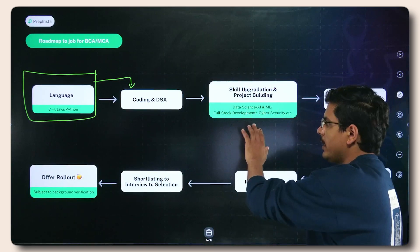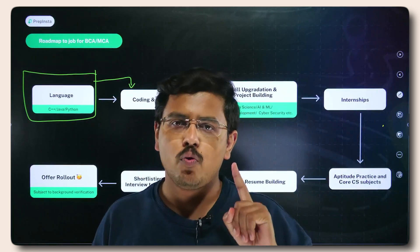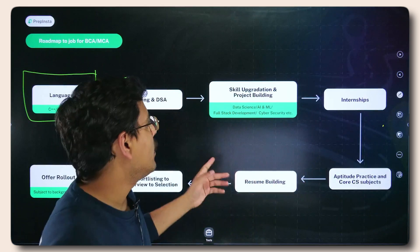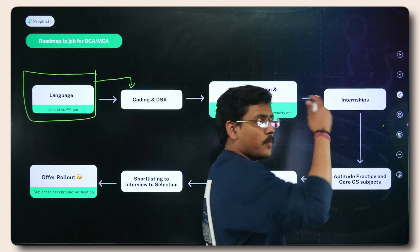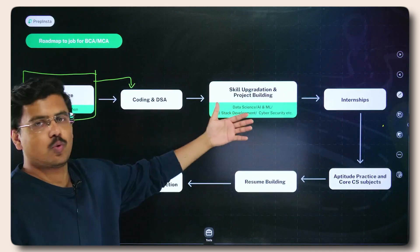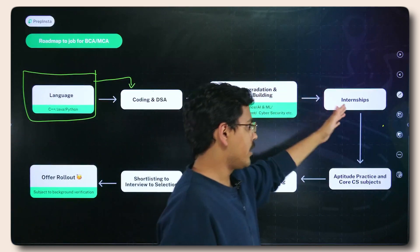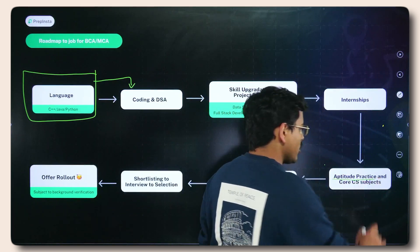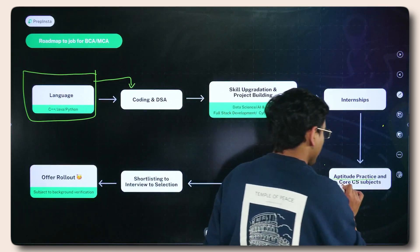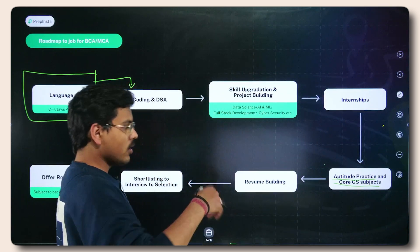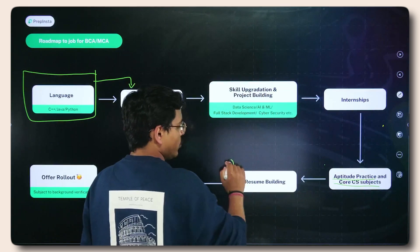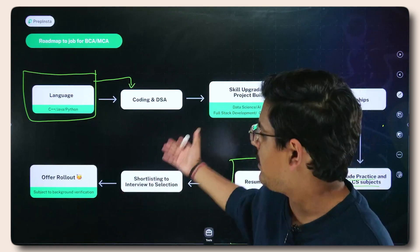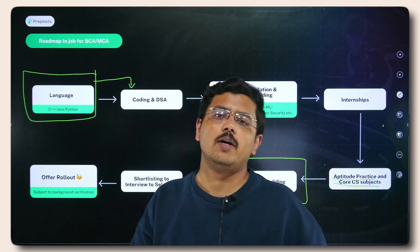Skill upgradation and project building is very essential — you need one good skill through which you can get a job. I will tell you which exact skill is best for you. After that, you need to do good internships. The basic order is: language → coding and DSA → skill upgradation → internships → aptitude practice → core CS subjects → resume building → apply → get shortlisted → get interviewed → get selected → offer rolled out, provided everything is good in background verification.